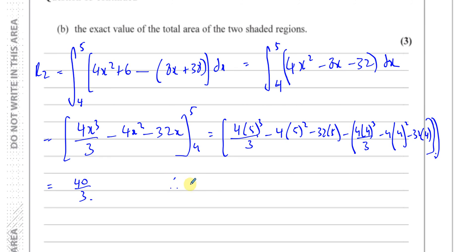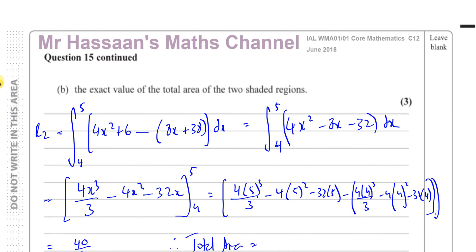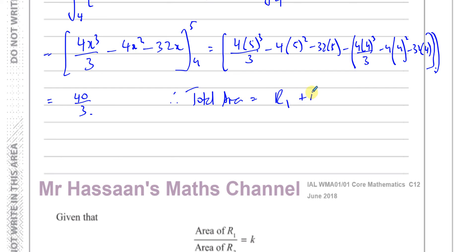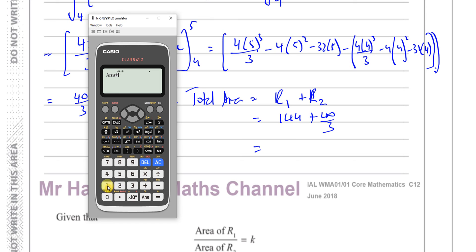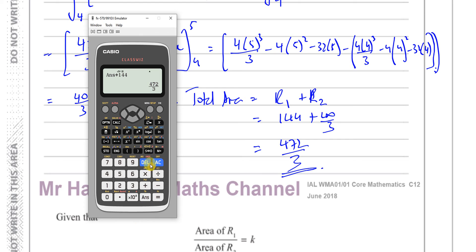Therefore, the total area is R1 plus R2, which is 144 plus 40 over 3. The question says find the exact value, so we'll leave it as a fraction. 144 plus 40 over 3 gives you 472 over 3. That's the exact value. You can also write it as the mixed number 157 and one third. Both are acceptable answers — in square units.